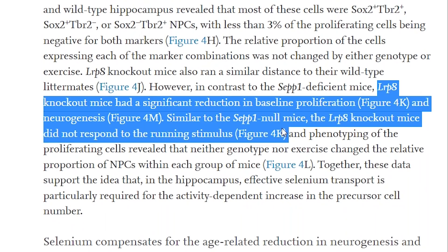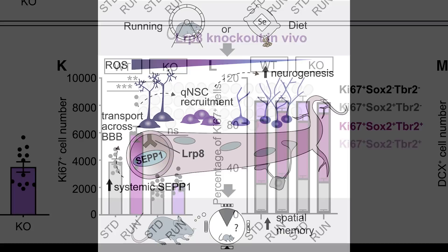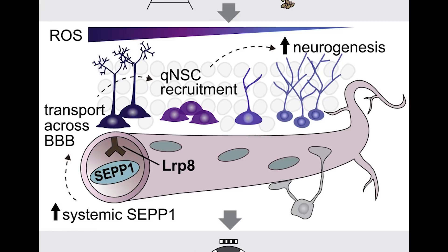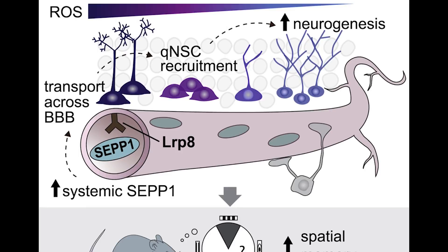So to summarise all of these findings so far, the authors have generated this figure. Selenium, or running, mediates an increase in neurogenesis in adult mice. The former mechanism involves both selenoprotein P and LRP8, and this increased neurogenesis is correlated with improvements in spatial memory.